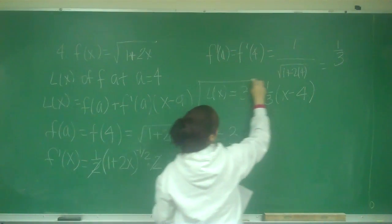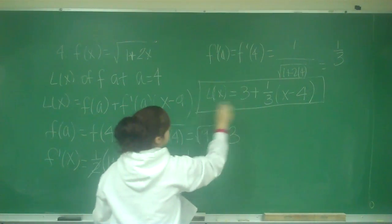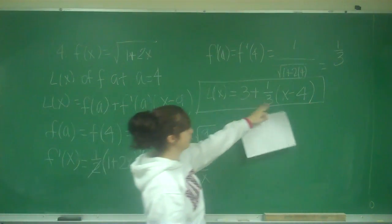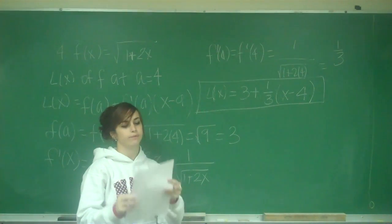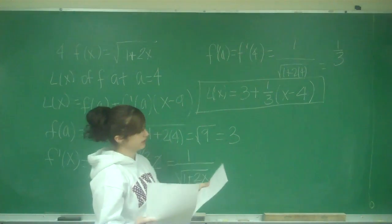And you can leave it in this form or you can multiply it out, distribute the 1/3 through and add your like terms. Or you can just leave it in that form. So that's part A, which was the linearization.